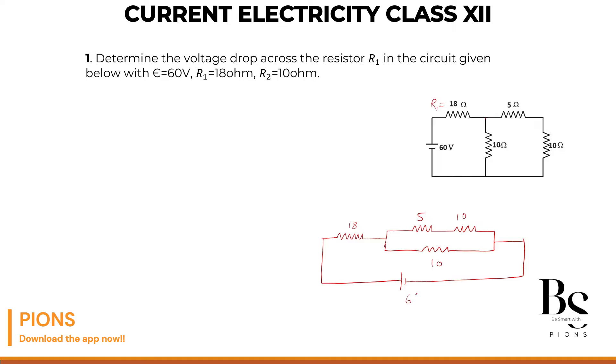This is our 60 volts. The 60 volts will be split across this branch and across this whole branch, because this whole branch is in series with 18 ohms. What we'll do here is first we'll simplify further.